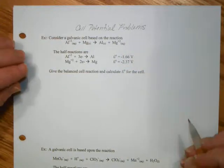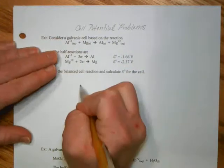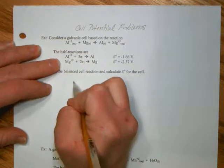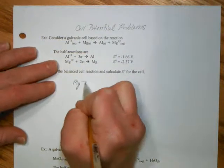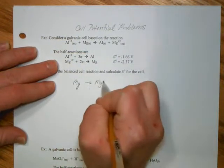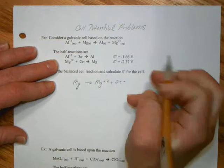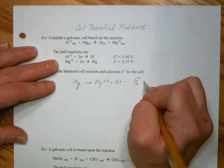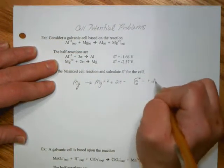But how will we set this up? Well, I like to do the oxidation first. And so I'm going to flip this reaction, and then flip the value of E for the cell, and then give my other reaction.